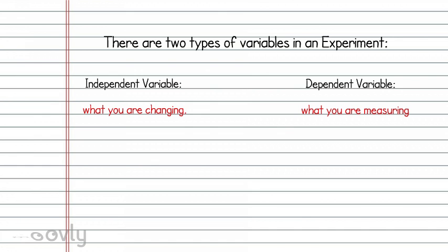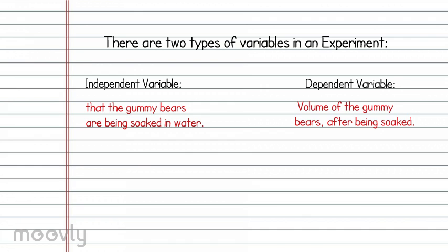So going back to the gummy bear example. The change in the experiment is that the gummy bears are being soaked in water. The dependent variable is what you're measuring, or the volume of the gummy bear after being soaked.